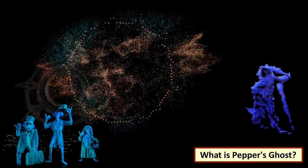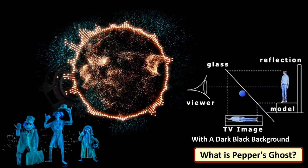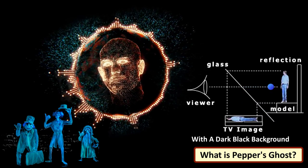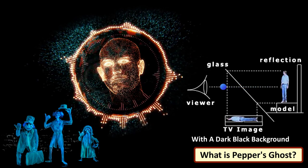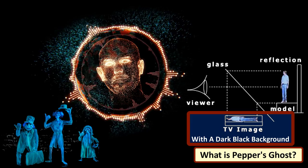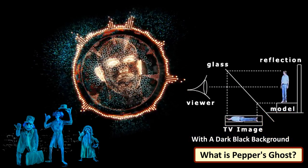Pepper's Ghost is an effect where you project something with a dark black background out to a transparent screen at an angle and it reflects off at an angle. So when someone looks at the transparent screen, they see the reflected image or the ghost. The background of the Pepper's Ghost has to be black since you only want the ghost to be projected on the screen.